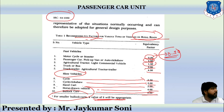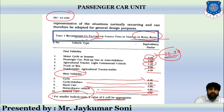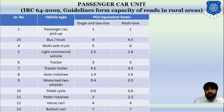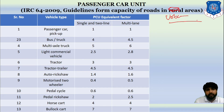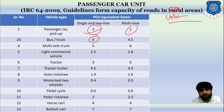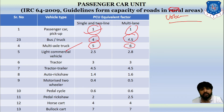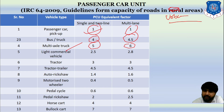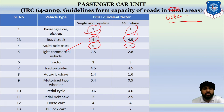For urban areas, the PCU guidelines are as follows: passenger car is 1.0 on both single and multi-lane roads. Bus or truck is 4.0 on single lane and 4.5 on multi-lane. Multi-axle truck is 5.0 on single lane and 6.0 on multi-lane. LCV (Light Commercial Vehicle) is 2.5 on single lane and 2.8 on multi-lane. Tractor is 3.0 on both single and multi-lane.